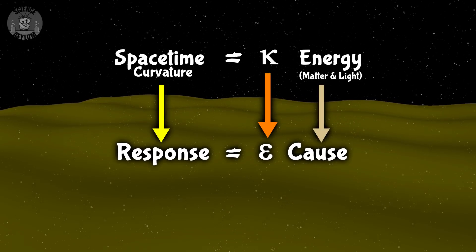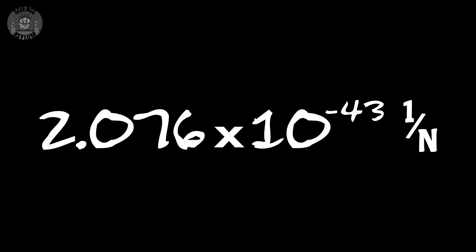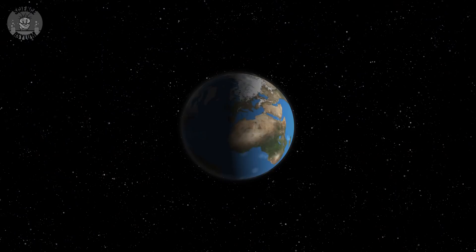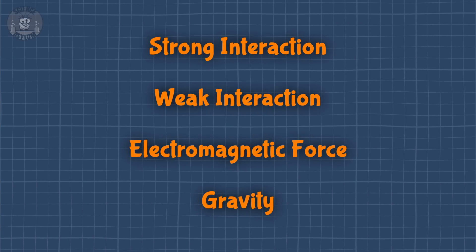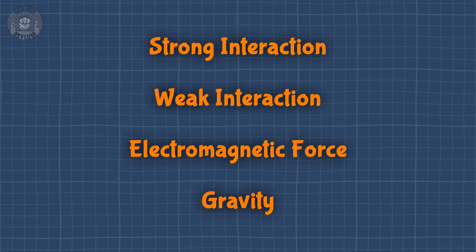And we happen to know what that constant is — it's on the order of 10 to the minus 43. That's 43 places after the decimal point, which is very little elasticity. Spacetime is super rigid, and that definitely makes sense. It takes the mass of something like a planet or moon to even notice gravity. It's the weakest of the fundamental forces because spacetime is so rigid.